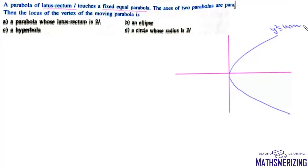Now we need to take a moving parabola whose axis is parallel to this given parabola and it is an equal parabola. So that means its latus rectum will again be simply 4a. We need to take a parabola whose axis is parallel to the axis of this parabola and which touches this given parabola.